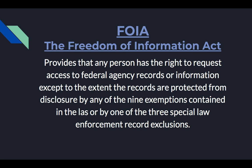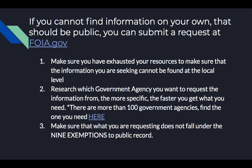If you cannot find information on your own that should be public, you can submit a request to FOIA.gov. First, make sure that you have exhausted your resources and that the information cannot be found at the local level. Second, research which government agency you want to request information from — the more specific, the faster you will get what you need. There are more than 100 government agencies; find the one you need at FOIA.gov. Make sure that what you are requesting does not fall under the nine exemptions to public record. Check FOIA.gov for more information.